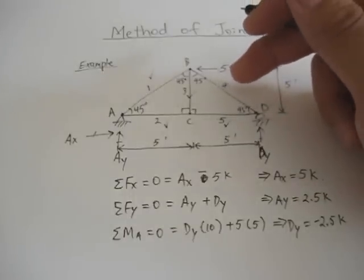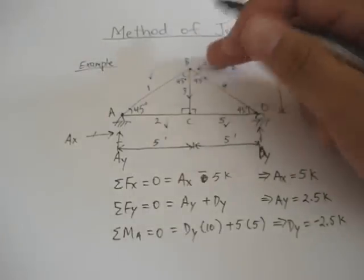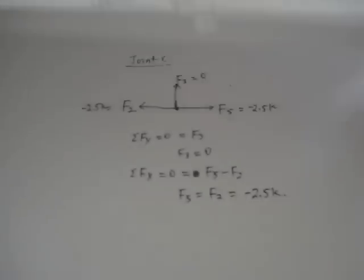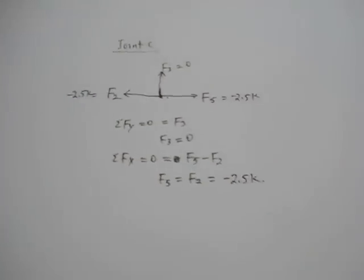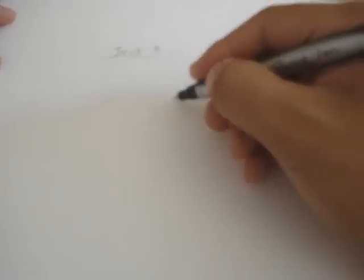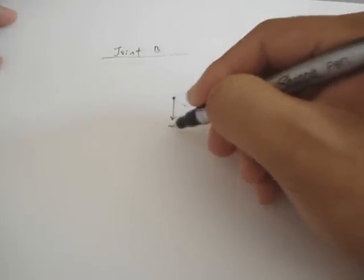Now, the only way to do that is to look at joint B or joint D. Let's look at joint B. So, joint B, you got F3 going down.